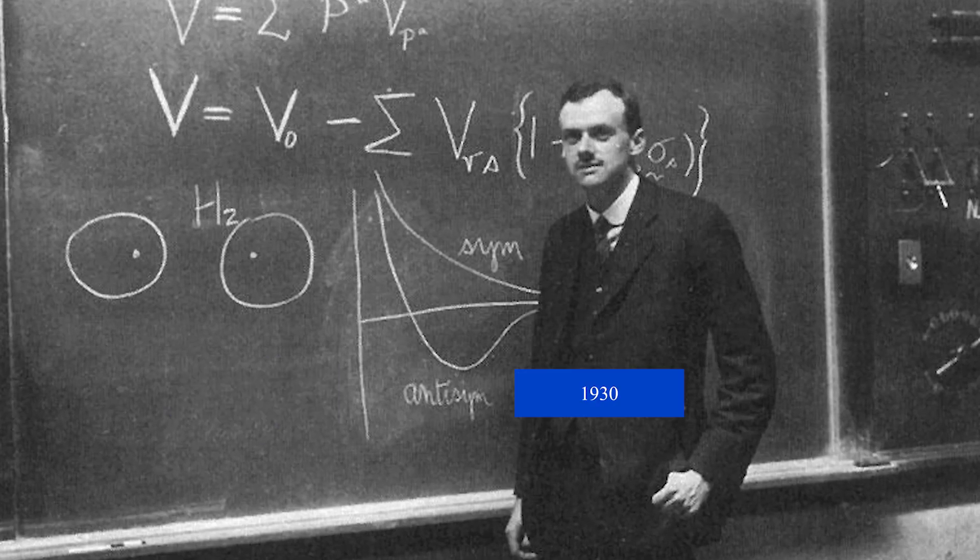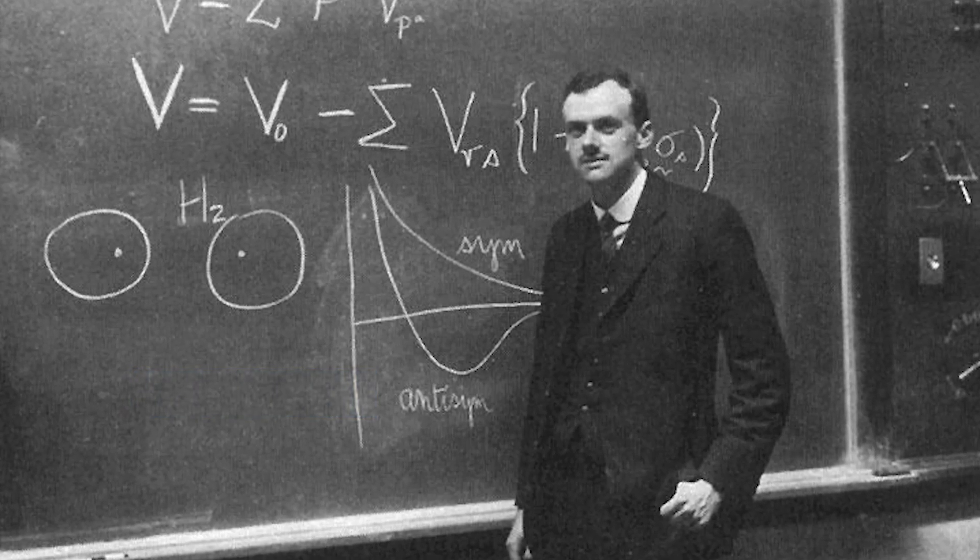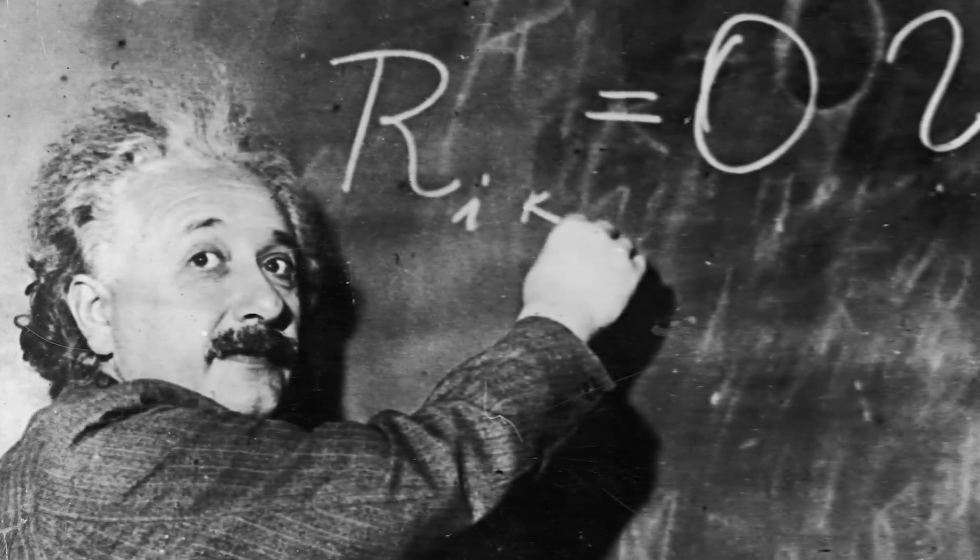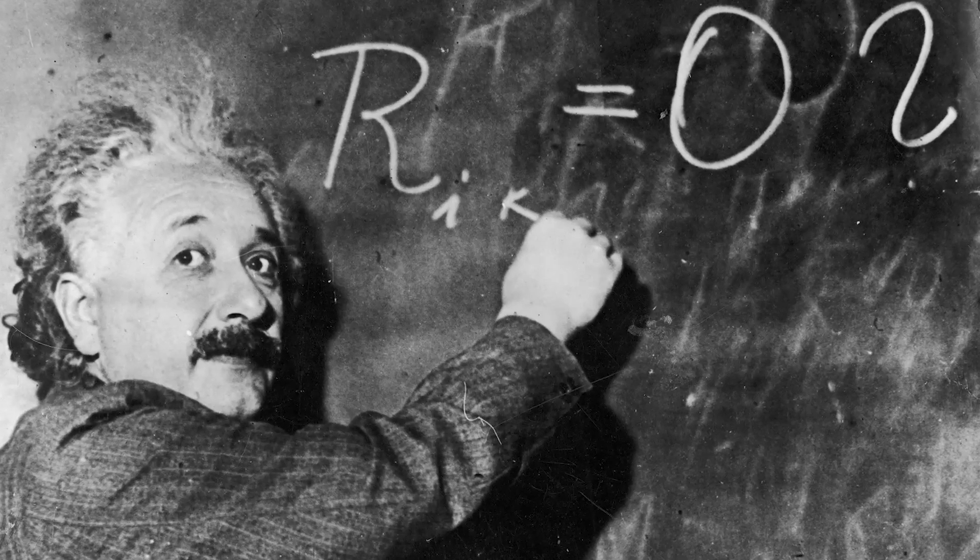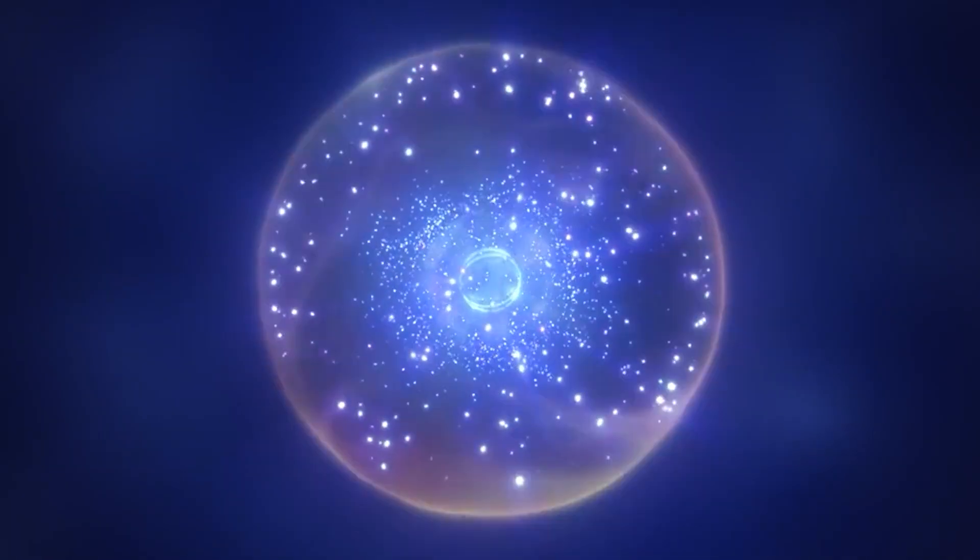But what exactly is antimatter? In 1930, Paul Dirac formulated a quantum theory for the motion of electrons in electric and magnetic fields, the first theory that correctly included Einstein's theory of special relativity in this context. This theory led to a surprising prediction.